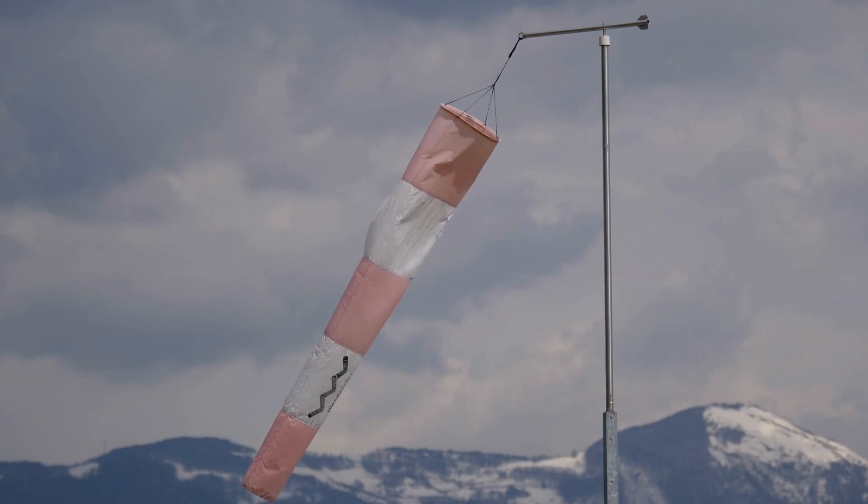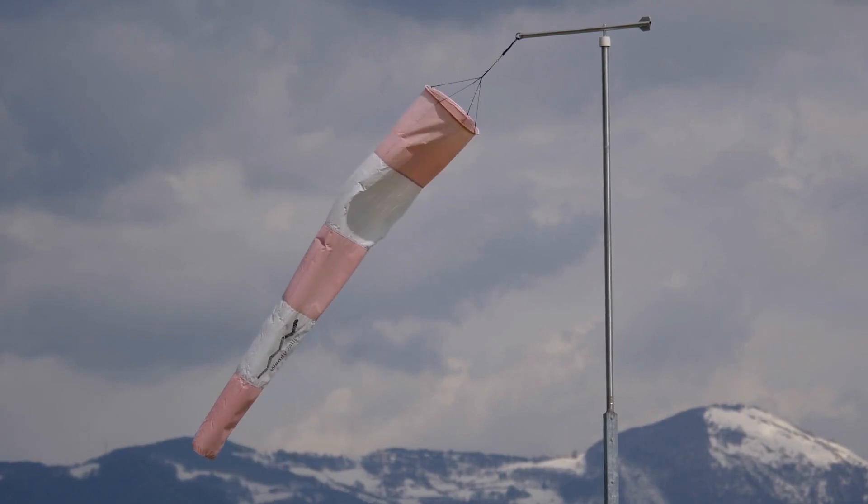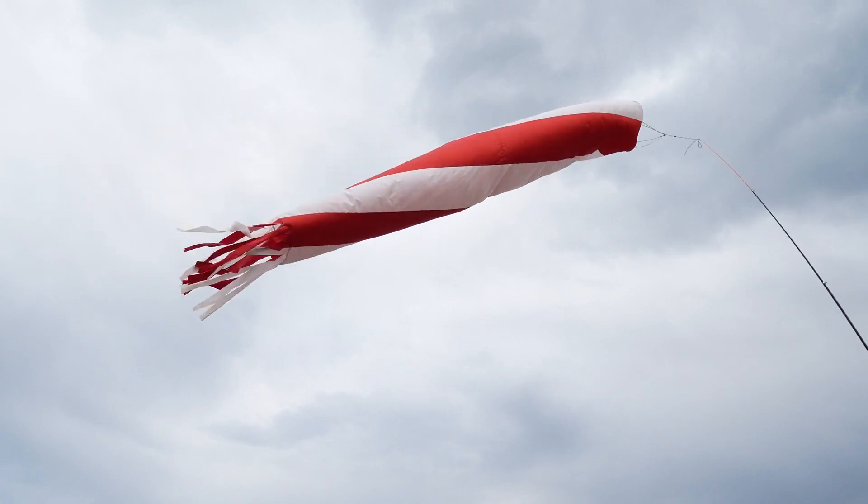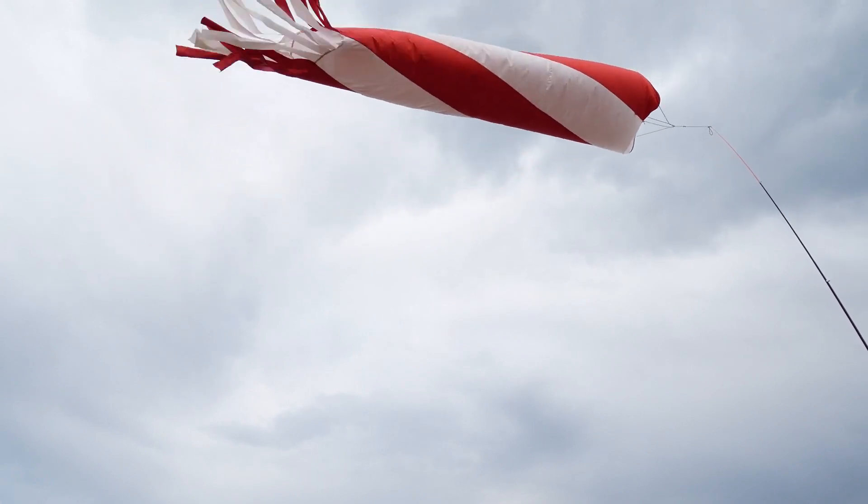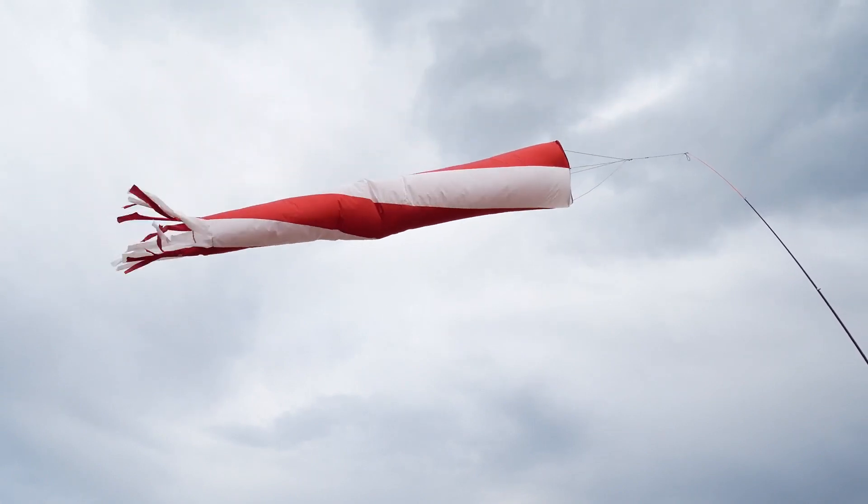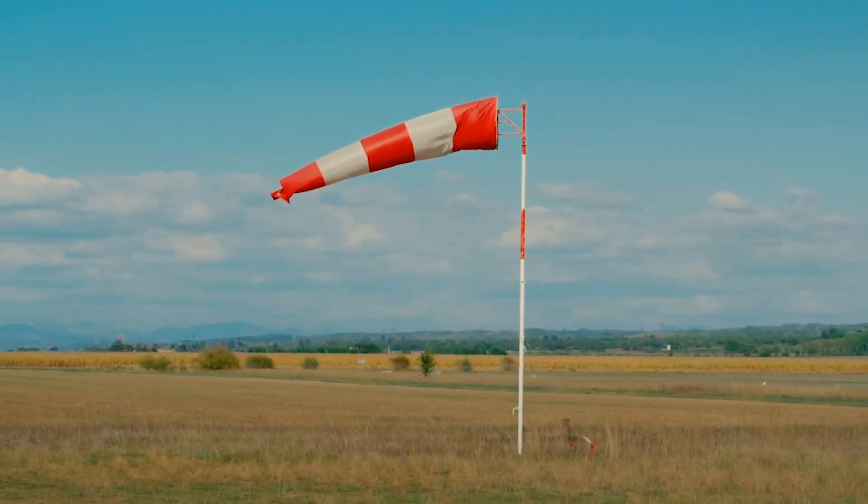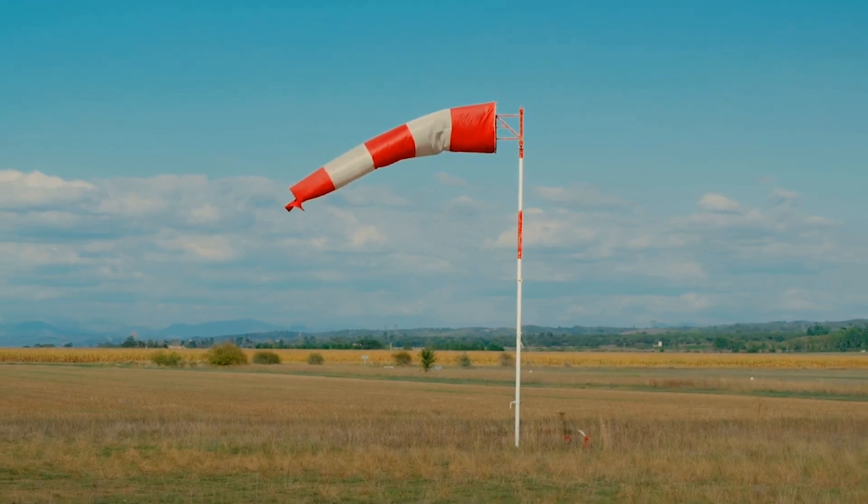If the wind sock is sagging, this indicates that the wind velocity is low. If the wind sock varies from straight to sagging, the pilot knows the winds are gusting. Wind socks can be rated for different wind velocities. For example, a 15 knot wind sock will straighten out with winds equal or greater than 15 knots.